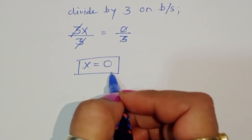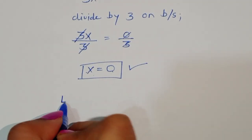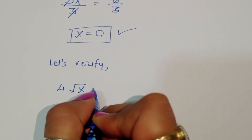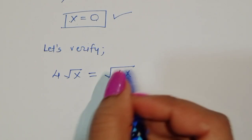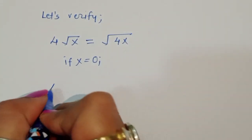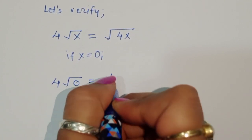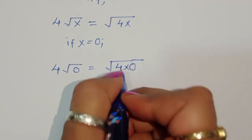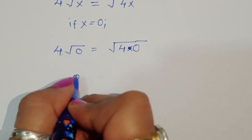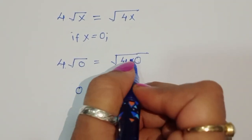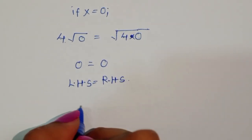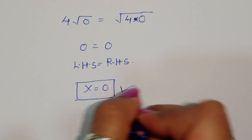Now let's verify whether this is correct. For x equal to 0, we substitute into 4√x = √(4x). On the left: 4 times √0 is 0. On the right: √(4 times 0) equals √0 which is 0. So LHS equals RHS: 0 equals 0. Therefore x equal to 0 is the correct solution.